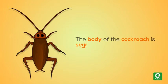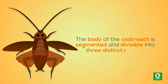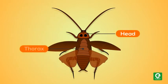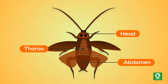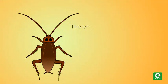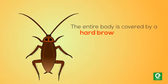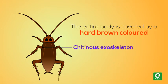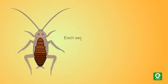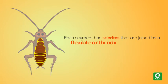The body of the cockroach is segmented and divisible into three distinct regions: head, thorax, and abdomen. The entire body is covered by a hard brown-colored chitinous exoskeleton. Each segment has sclerites that are joined by a flexible arthrodial membrane.